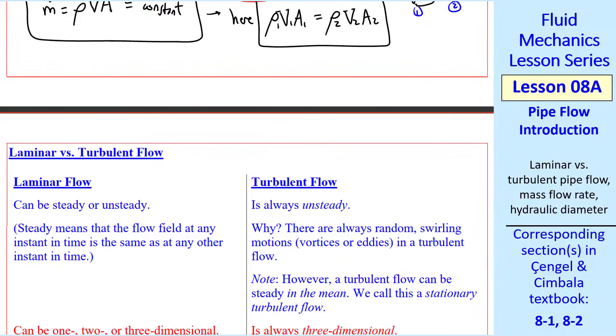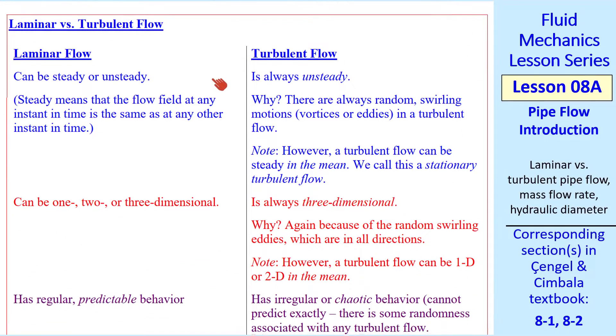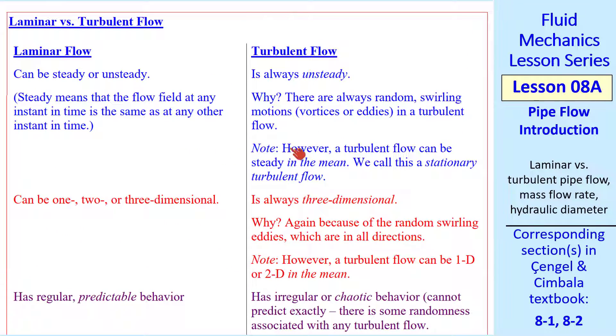Now I want to briefly compare laminar versus turbulent flow. I have two columns with corresponding comments. Laminar flow can be steady or unsteady, but turbulent flow is always unsteady. With turbulent flow, there's all these eddies mixing things around. By the way, steady means that the flow field at any instant in time is the same as at any other instant in time. But because of these vortices or eddies in a turbulent flow, it's always unsteady.